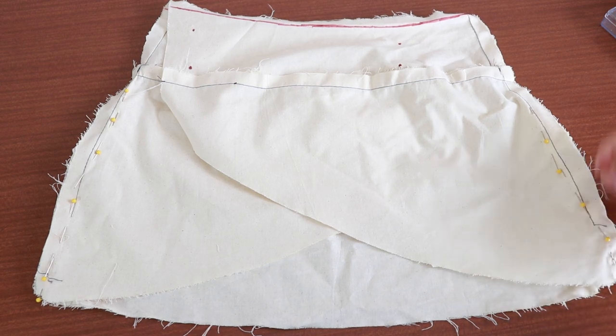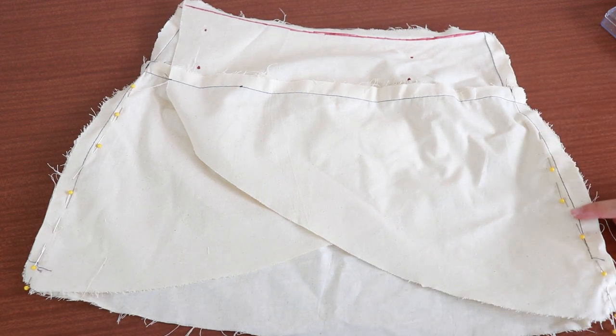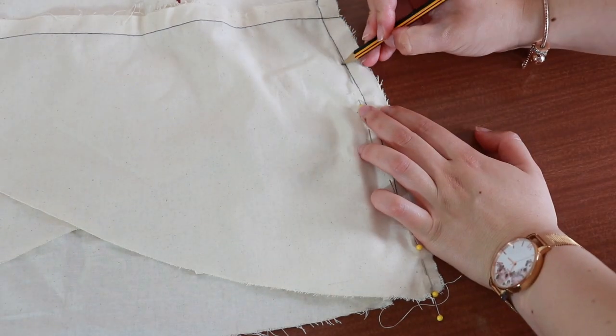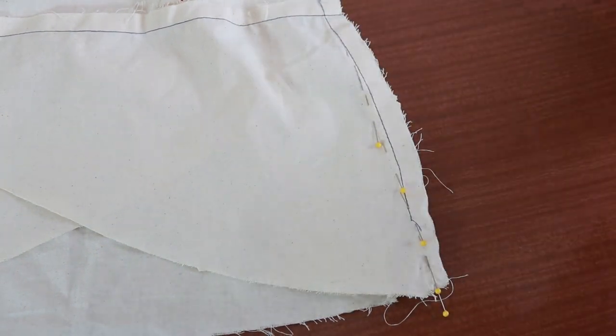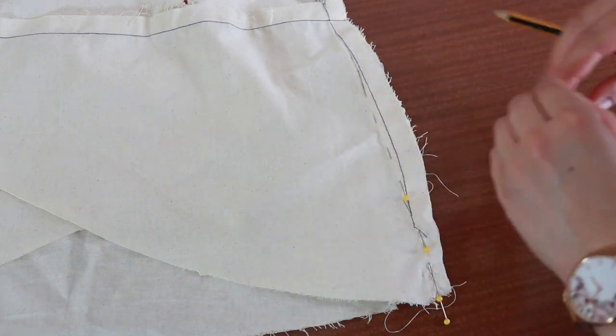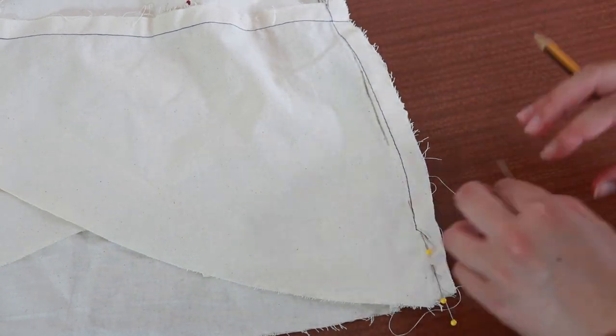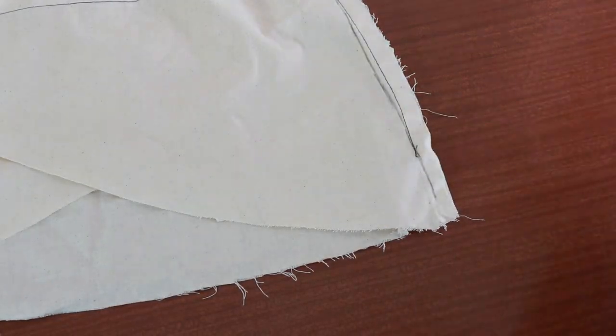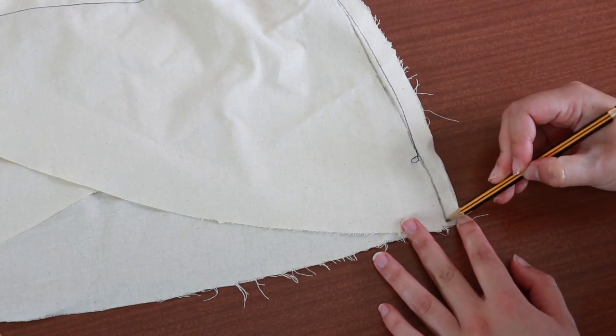Take your toile off. Be careful not to unpin any of the fitting adjustments that you made. Grab a pencil and draw on top of the pins that you used to make the adjustments. For the side seam, I decide to take it in slightly above the hip and let it out by about 1 cm at the bottom edge. Draw a line to represent the new seam line.